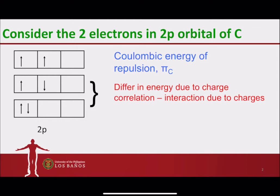This increase in repulsion is counted as Coulombic energy of repulsion with the symbol π_c. Between the middle and the bottom arrangement, the middle arrangement is a slightly more stable arrangement than the bottom arrangement because in the bottom arrangement there is an increase in repulsion, so there is an amount of energy equivalent to π_c.